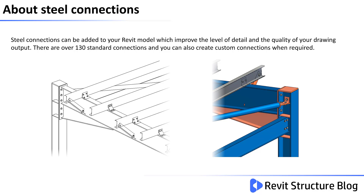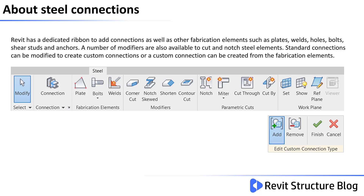There are over 130 standard connections and you can also create custom connections when required. Revit has a dedicated ribbon to add connections as well as other fabrication elements such as plates, welds, holes, bolts, shear studs and anchors. A number of modifiers are also available to cut and notch steel elements.